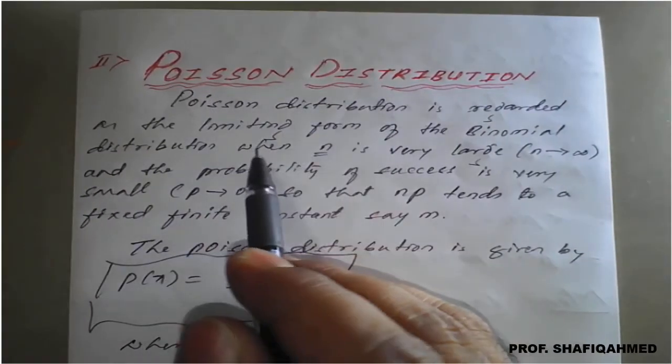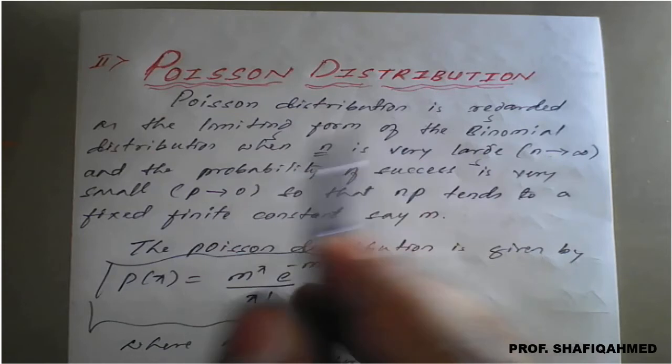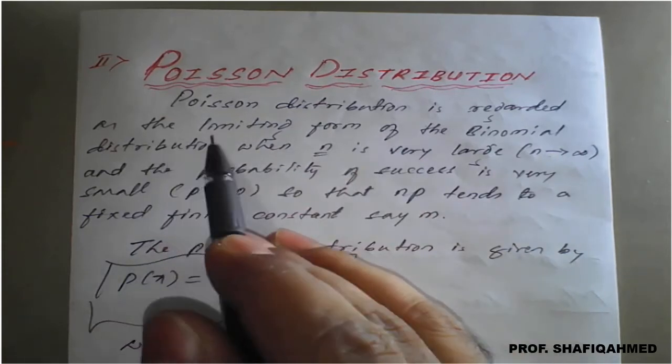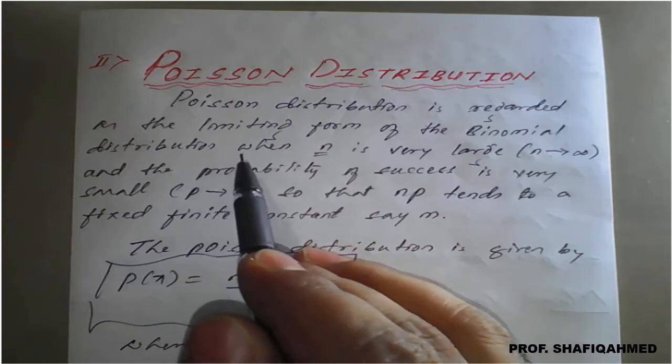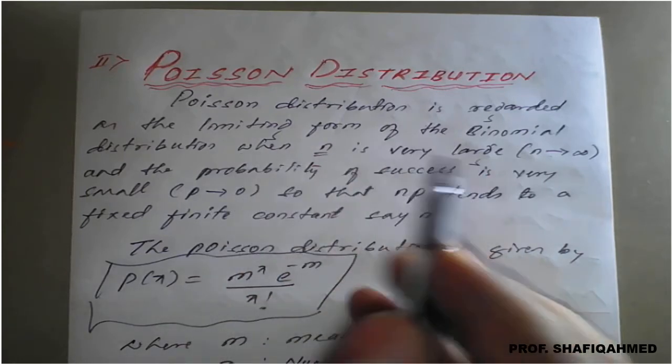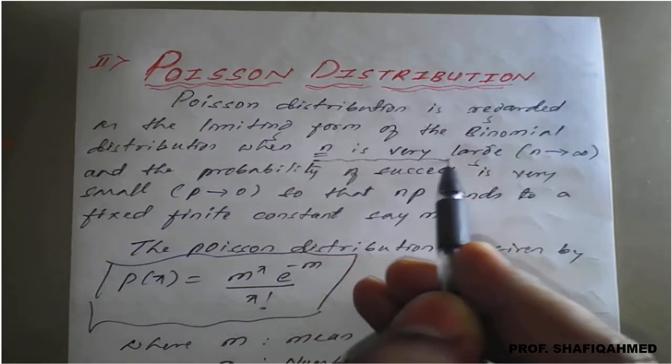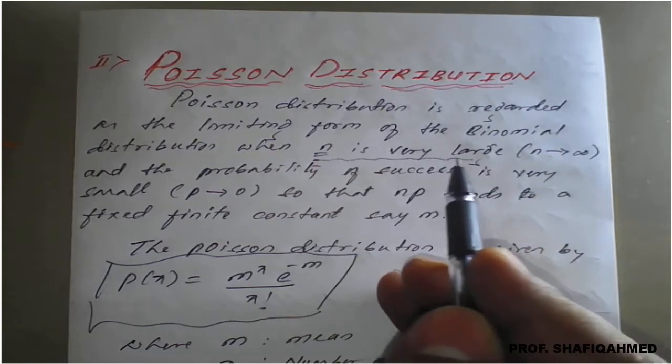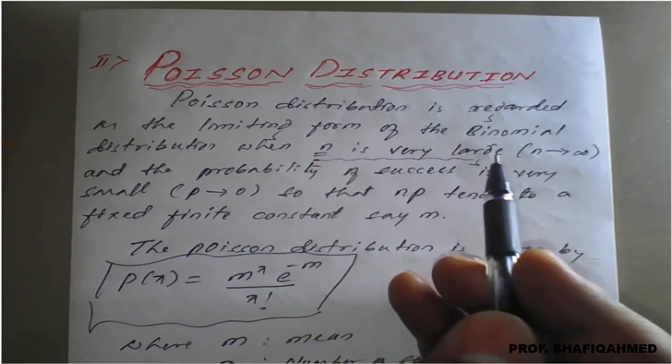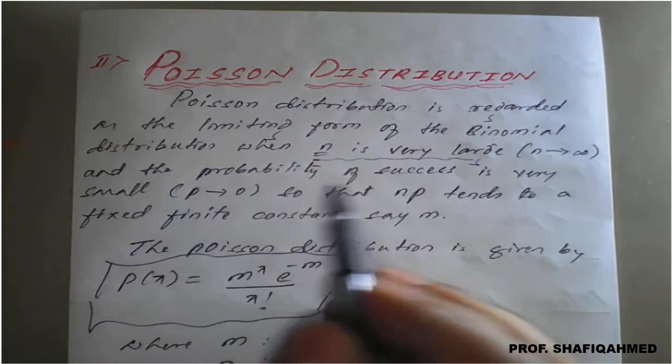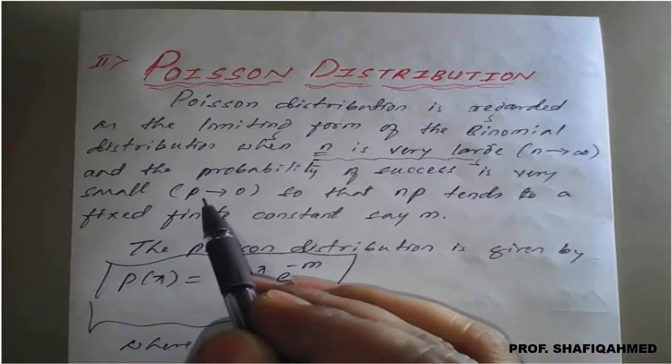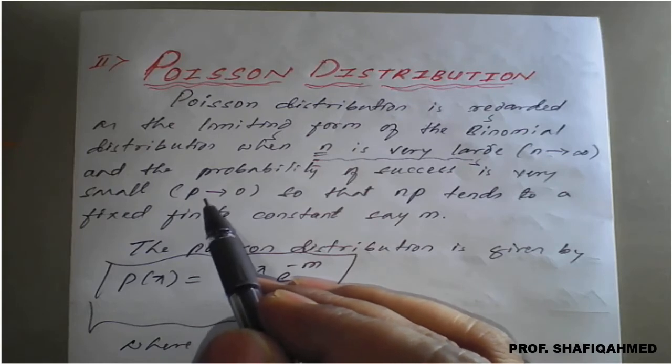Poisson distribution is regarded as the limiting form of the binomial distribution when n is very large, meaning you can consider n around more than 10 or more than 20 to infinite numbers, and the probability of success is very small. In this case, P is very small.